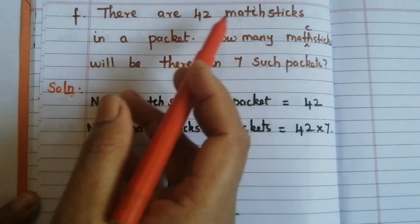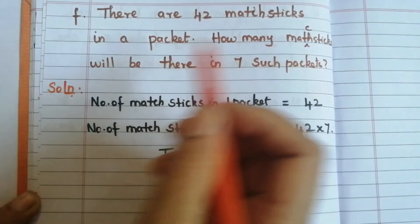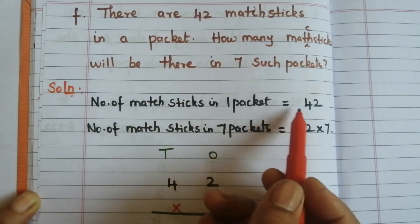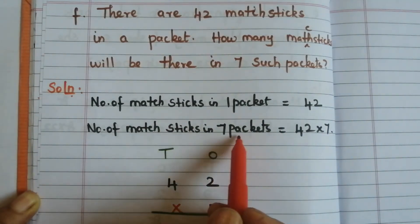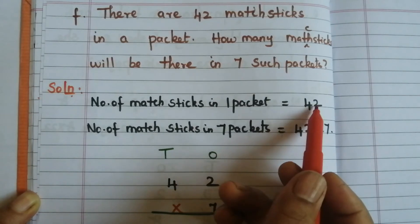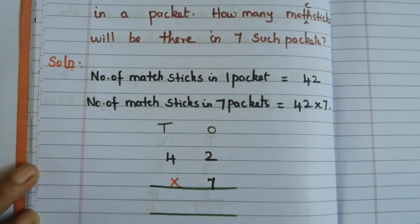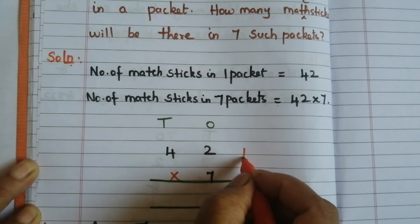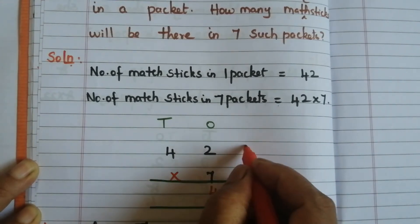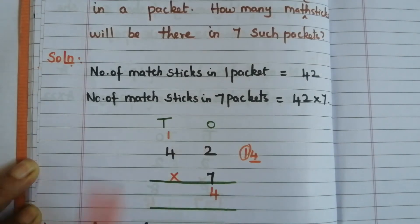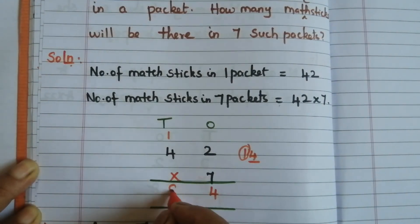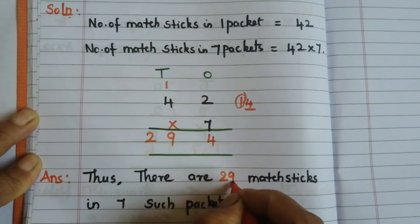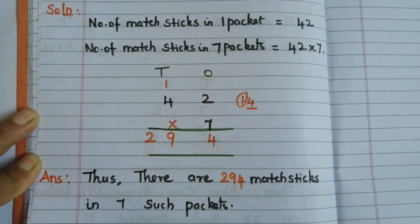F (last problem): There are 42 match sticks in a packet. How many match sticks will there be in 7 such packets? Solution: Number of match sticks in 1 packet = 42. Number of match sticks in 7 packets = 42 × 7. Write the numbers vertically: 7 twos are 14 — write 4, carry over 1. 7 fours are 28, plus 1 = 29. The answer is 294. There are 294 match sticks in 7 such packets.